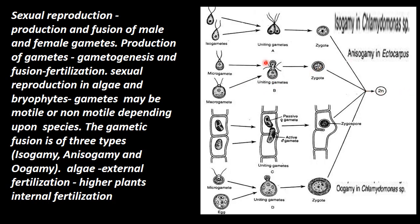In both isogamy and anisogamy, the individual gametes are haploid and the resulting zygote is diploid. An example of anisogamy is found in Ectocarpus.